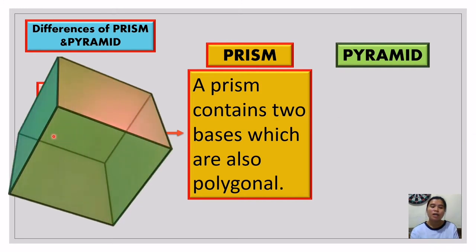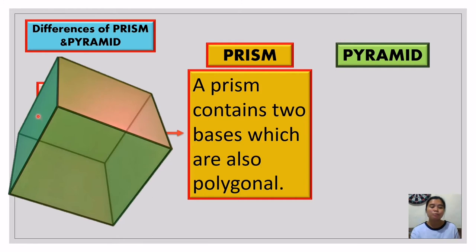Let's have an example. This is called a cube or square prism. As you can see, this is its base — a square base — and the other base is at the bottom, which is also square. It has two bases, and these bases are the same shape; both are squares. A square is an example of a polygon — it's a quadrilateral. The sides of the cube are called faces.